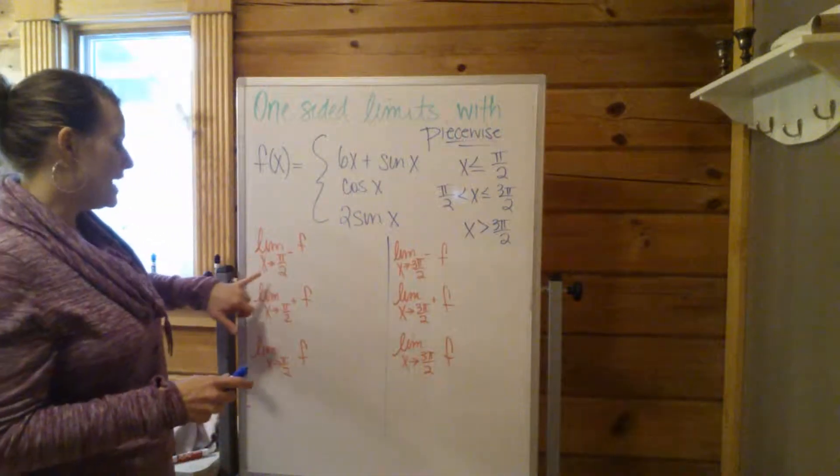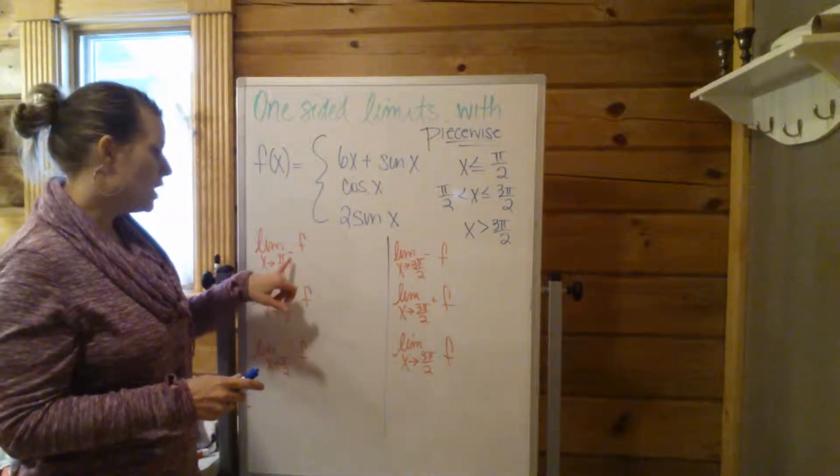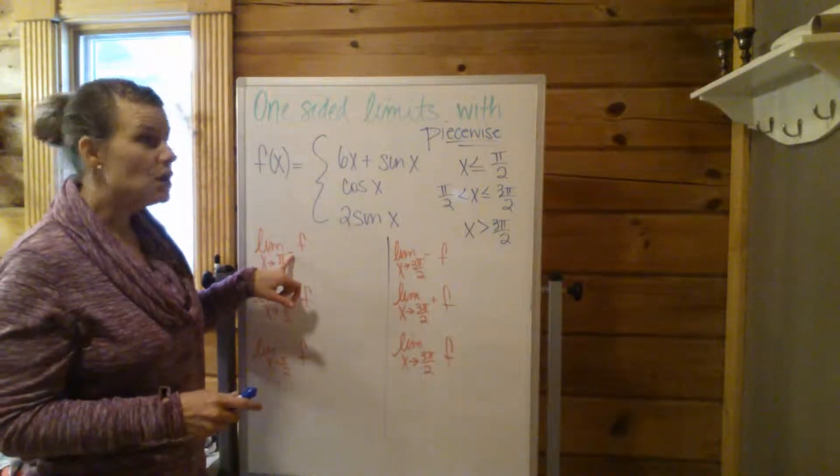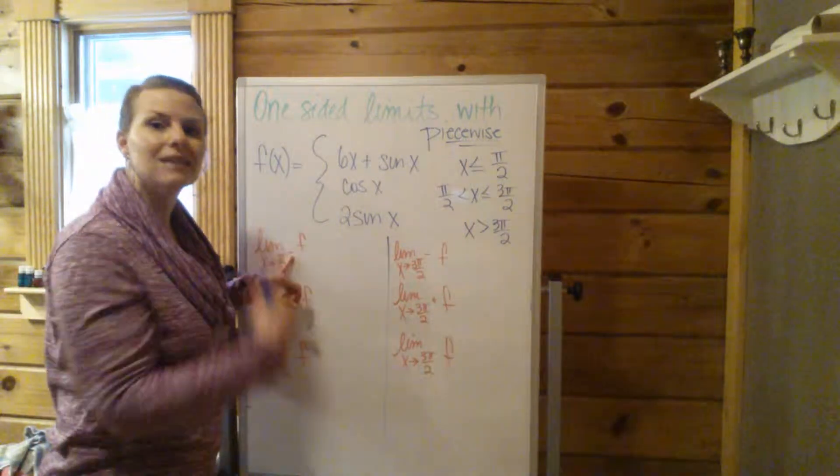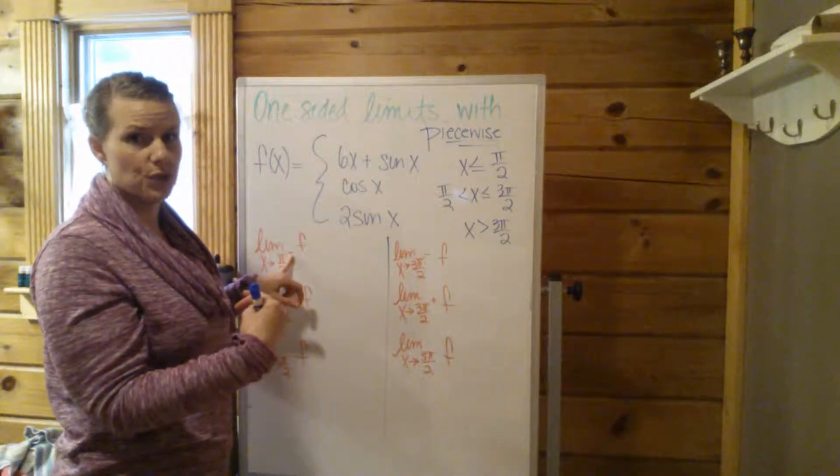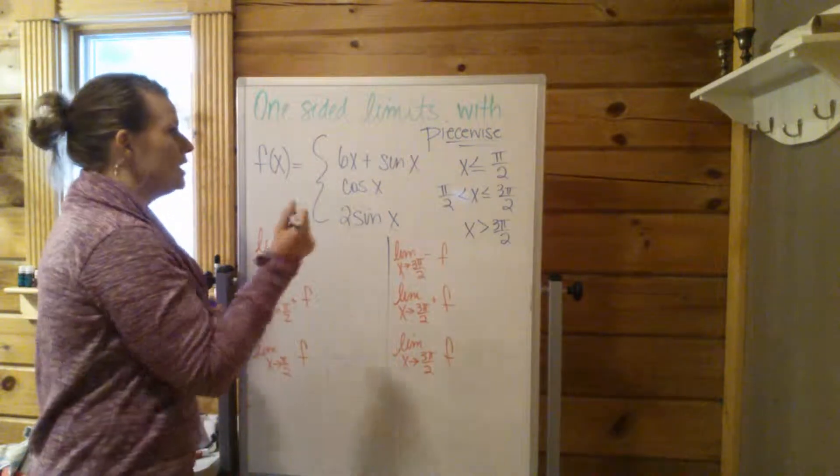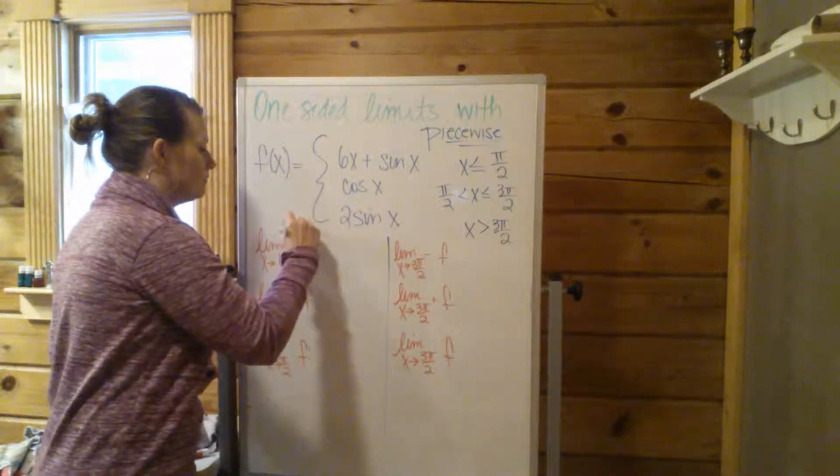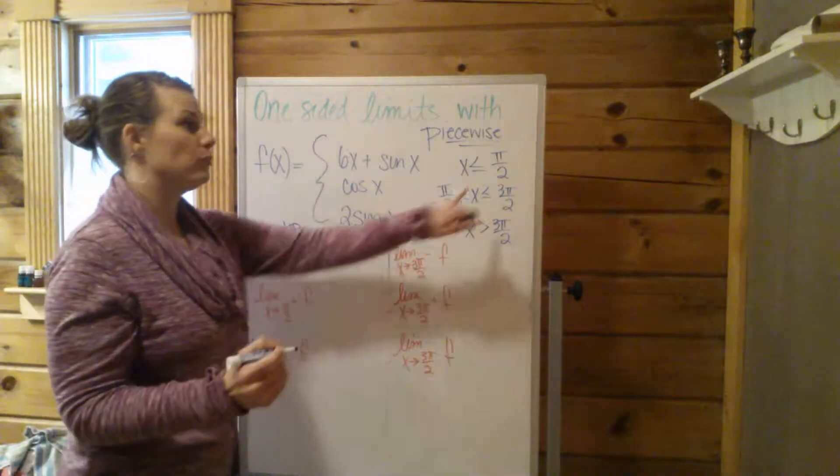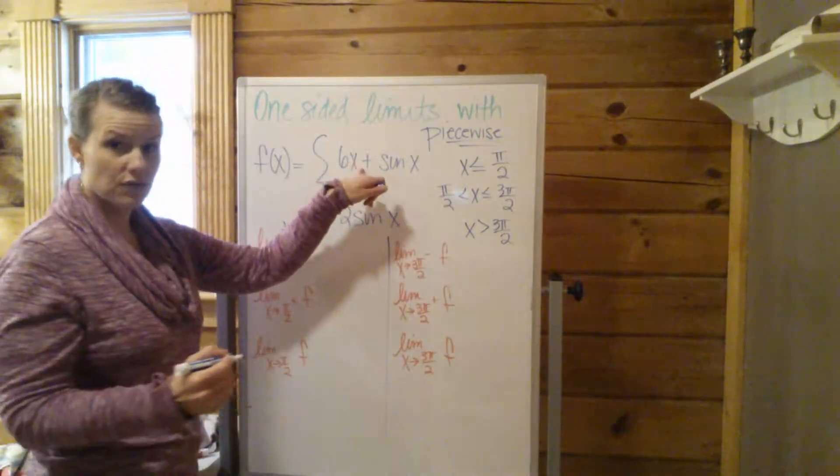So for the limit as x approaches π/2 from the left, from the left means less than π/2. So for this one, we're using the top. And then it's just a matter of plugging π/2 in for x.